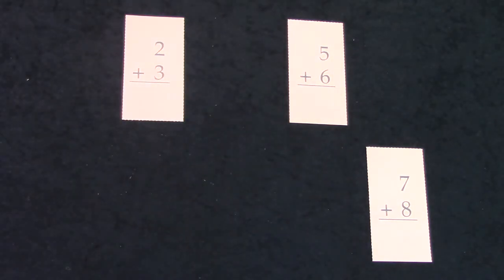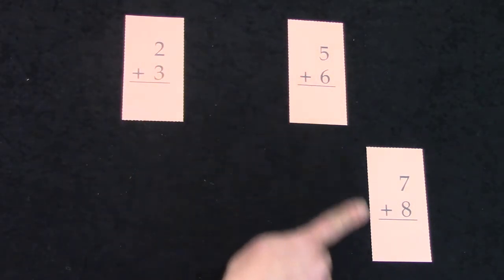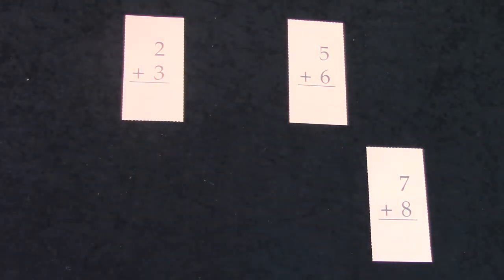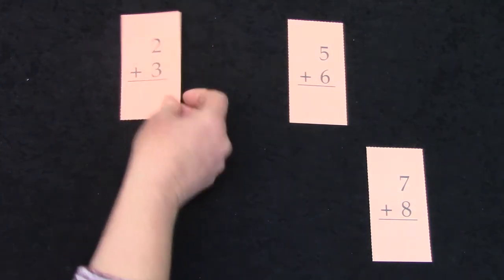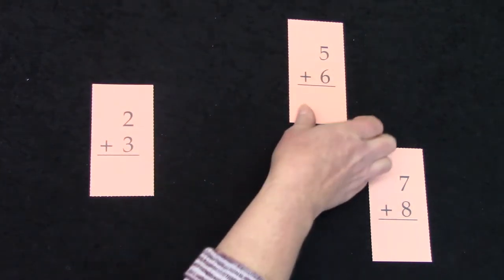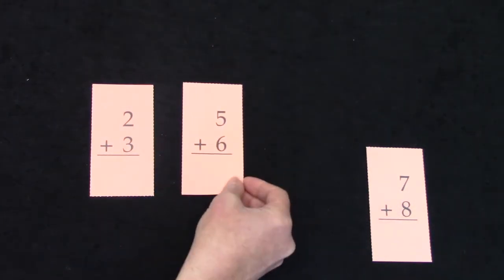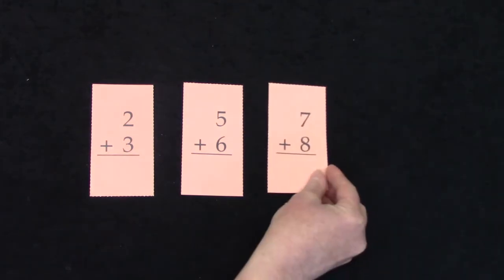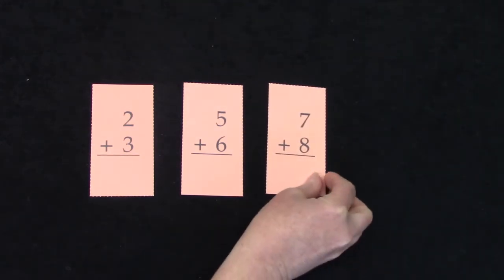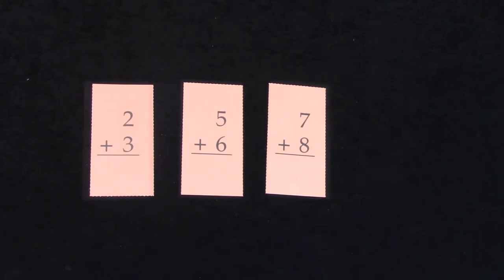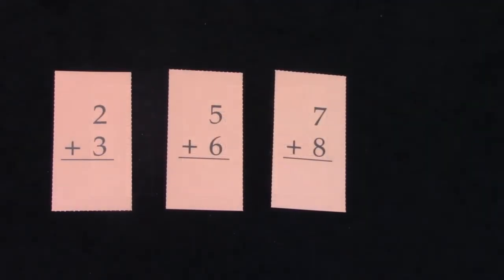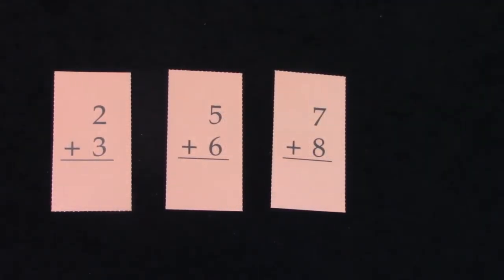Now I have three more facts here: two plus three, five plus six, and seven plus eight. Do you remember what type of facts those are? You are right! Those are doubles plus ones.